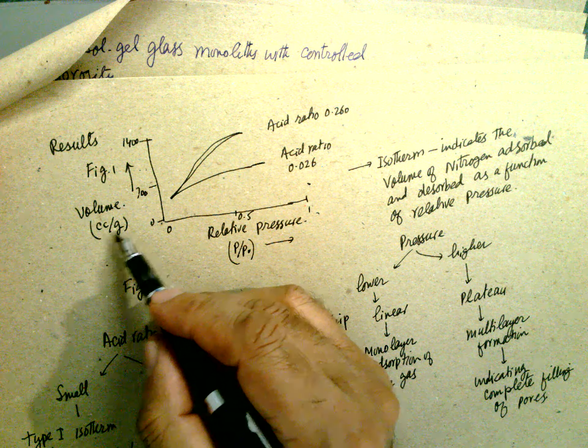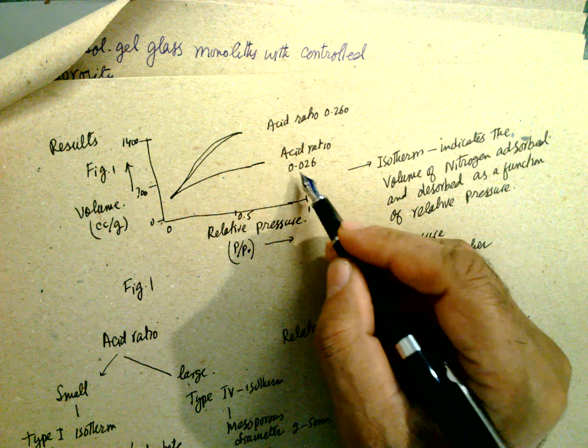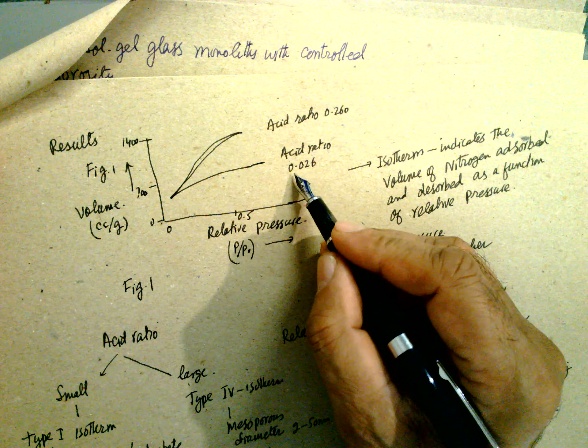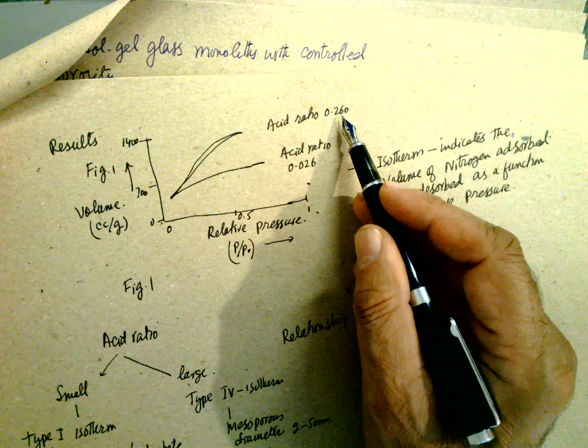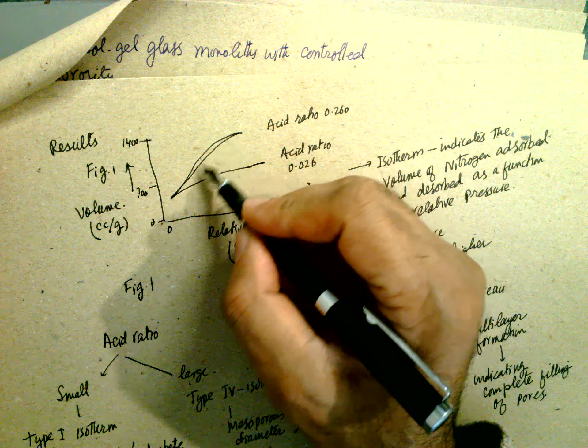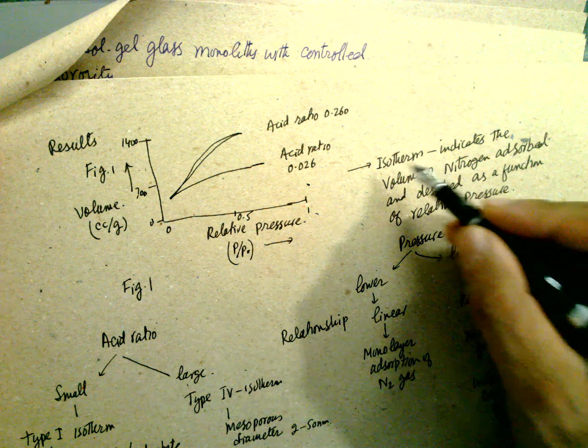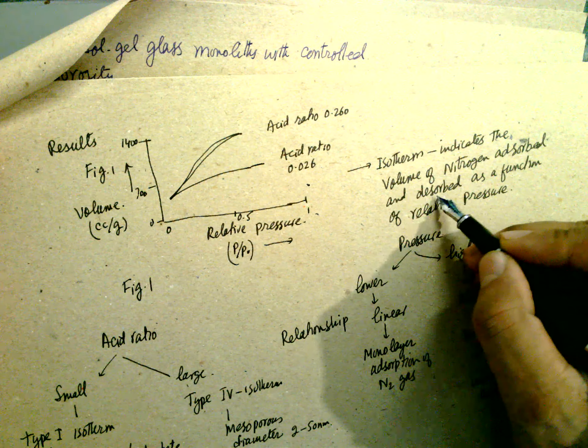Results: relative pressure versus volume, cc per gram, centimeter cube per gram is this one. This is the acid point, high acid, and acid ratio is 10 times more. It goes like this one, and this is a hysteresis loop.